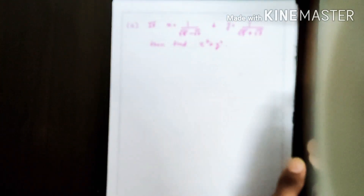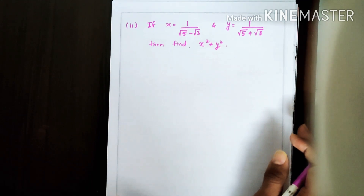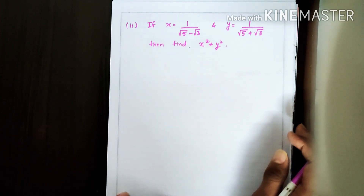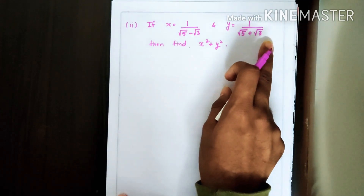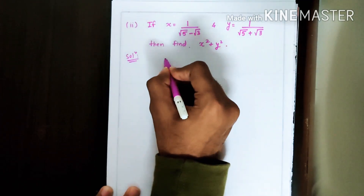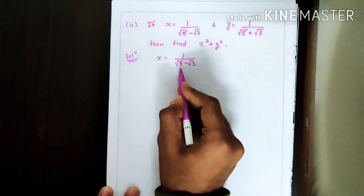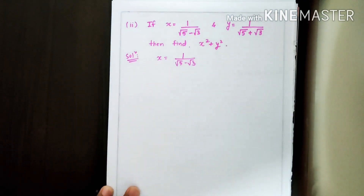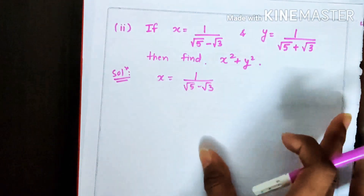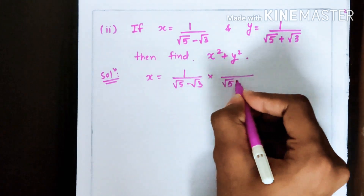The next question is: if x = 1 upon (√5 − √3) and y = 1 upon (√5 + √3), then find x² + y². Since the denominator of x is an irrational part, we need to rationalize it. To make the denominator rational, we multiply by the rationalizing factor.